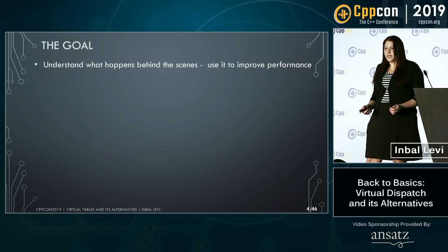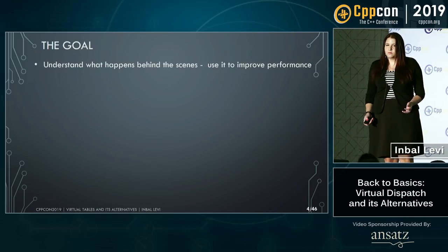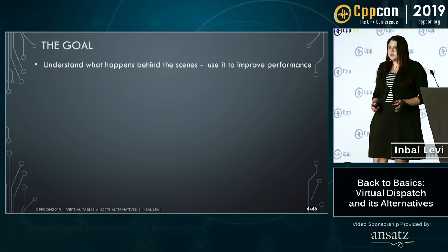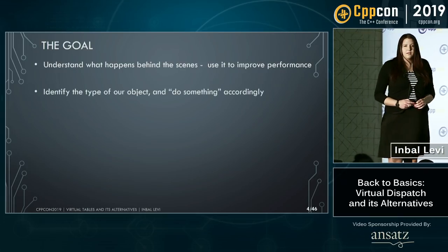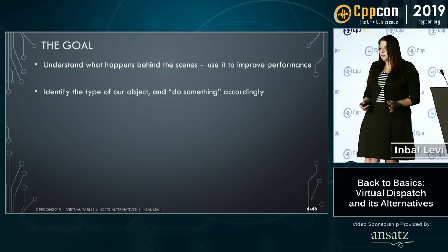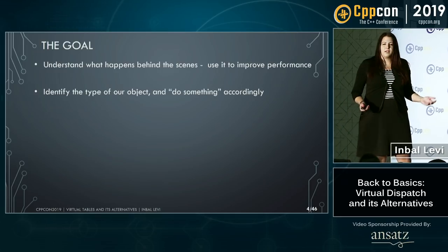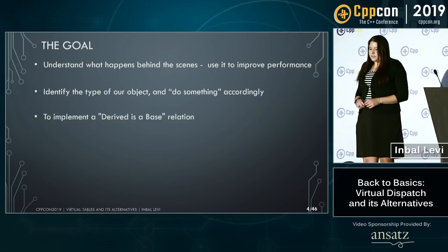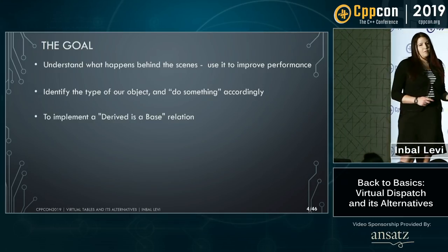Our goal is to understand what happens behind the scenes in order to improve performance, especially in the embedded world. Once we understand how exactly things work, we might be able to make them better. We also want to be able to identify the type of the object and according to the type, activate a function or similar. And it would be nice to have a derived-as-base relation at compile time.